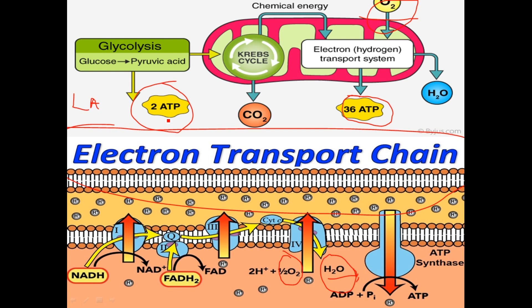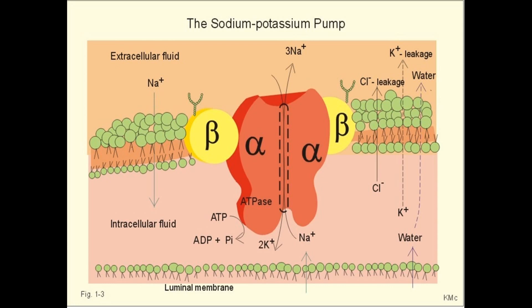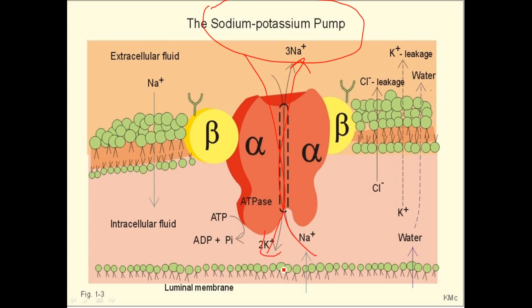Additionally, the ATP-dependent sodium-potassium ATPase pump won't work. In normal cases, the sodium-potassium pump is made up of two alpha and beta subunits. It pumps sodium (Na+) out from the cytosol to the extracellular fluid and transports potassium (K+) from the extracellular fluid into the intracellular fluid. We should remember that where there is Na+, water follows.